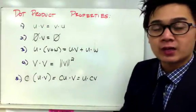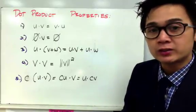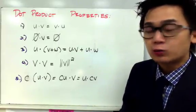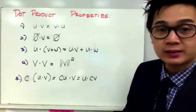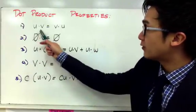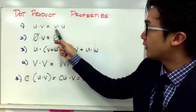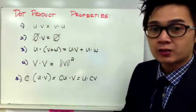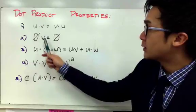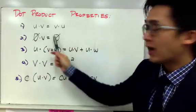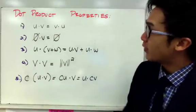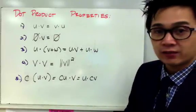Here are some properties of dot product that we're going to use. We have five properties: one of them is u·v is the same as v·u, which is similar to the commutative property. If you multiply a vector with zero, it's going to give you zero as your answer. The rest of the properties are self-explanatory.